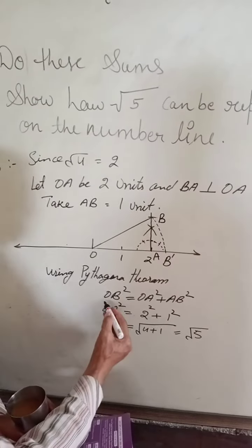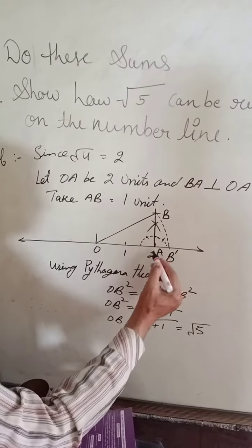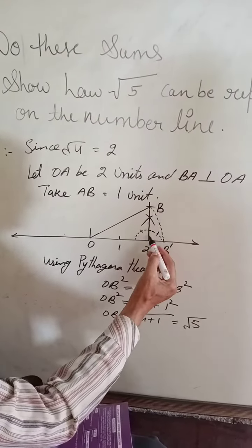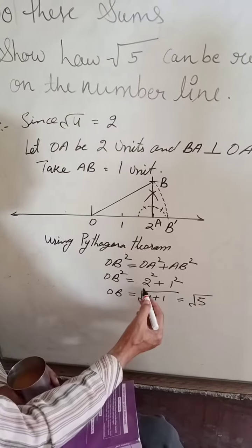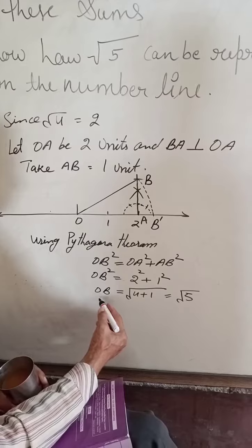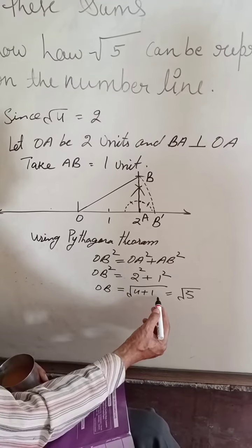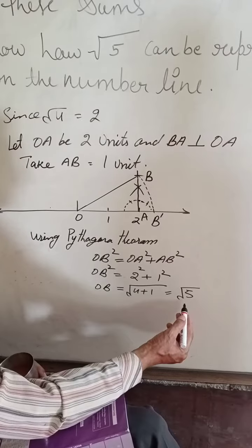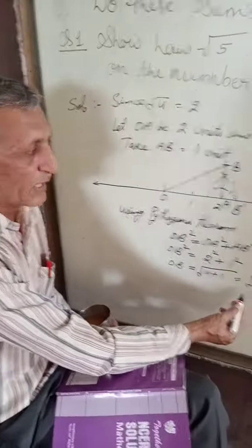Therefore, OB square is equal to OA square plus AB square. Putting their values, we have OB square is equal to 2 square plus 1 square. That gives you OB is equal to square root of 5. And this is what we were given to represent on the number line.